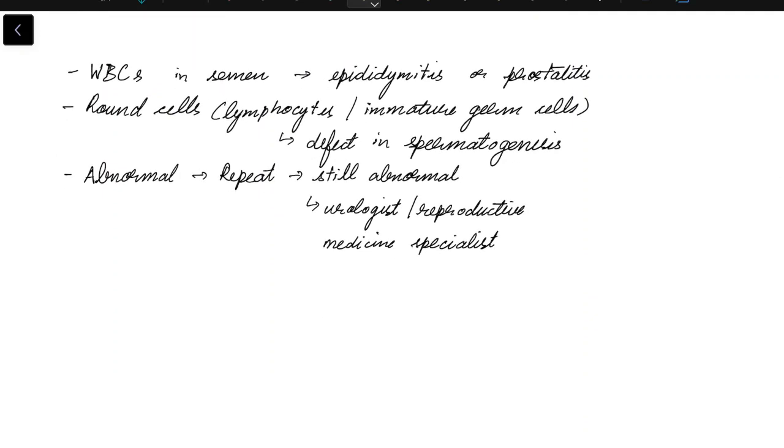During semen analysis, if you find white blood cells in semen, it might indicate epididymitis or prostatitis. If you find round cells, i.e. lymphocytes or immature germ cells, it might indicate defect in spermatogenesis.